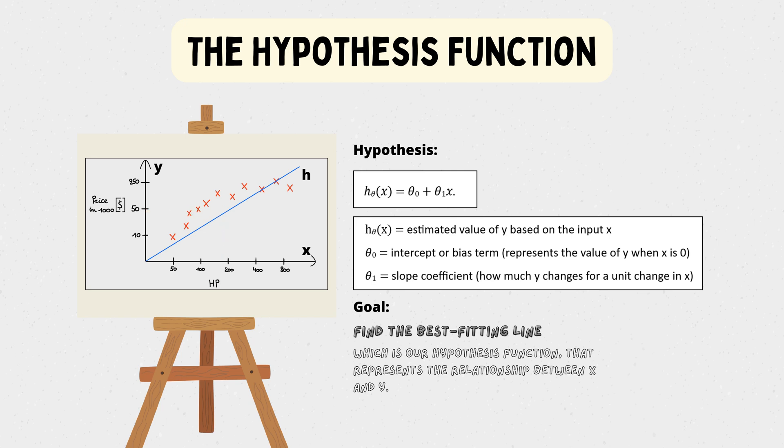Now, here comes the exciting part. During training, we adjust the parameters theta 0 and theta 1 to make our hypothesis function as accurate as possible in predicting y based on the given x values.